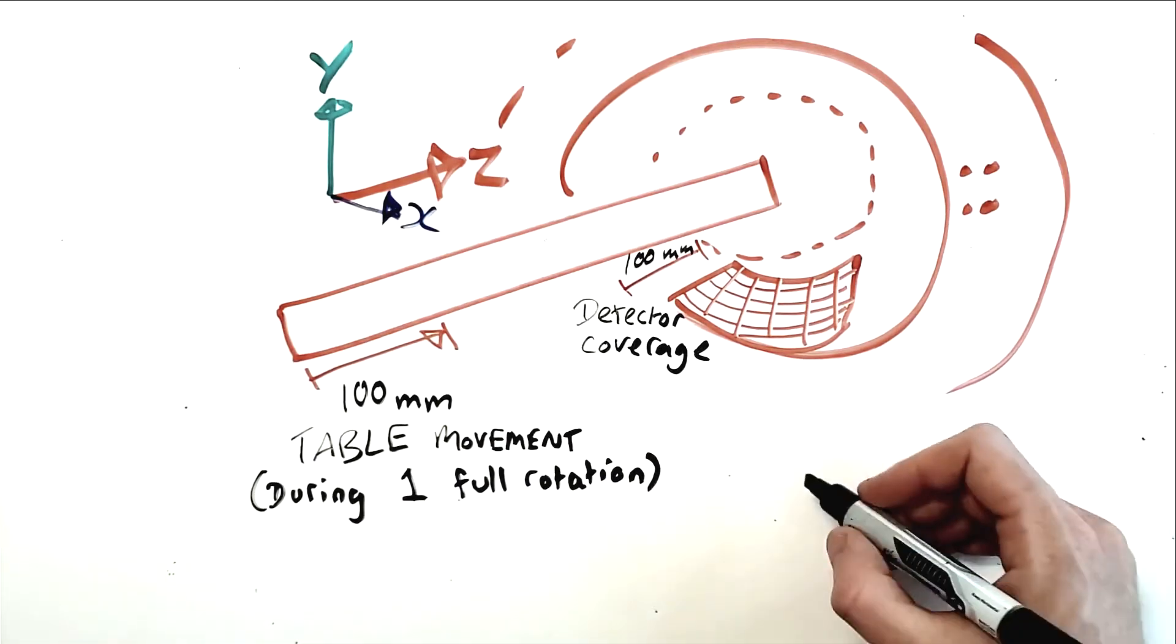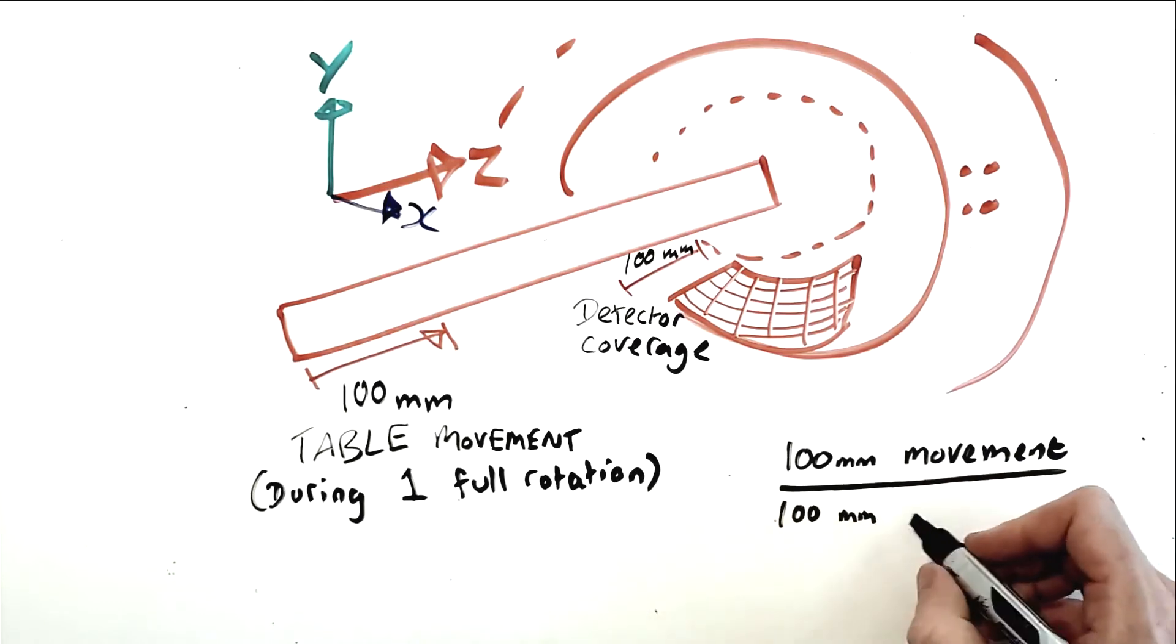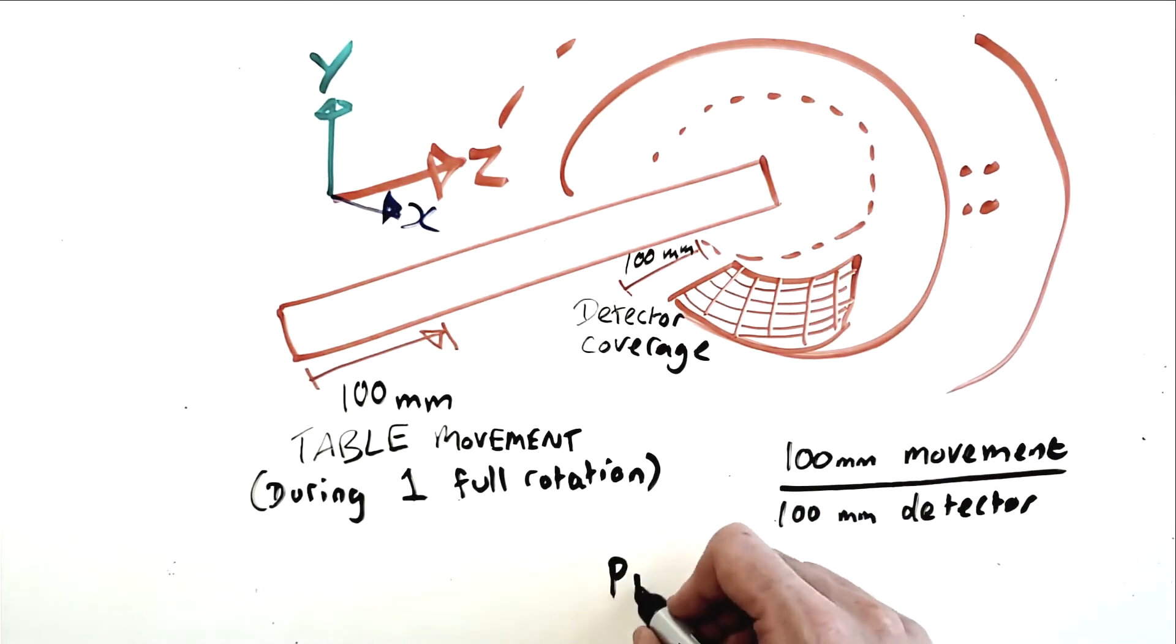A simple way to think of this is to interpret pitch as a measure of the table movement speed. And while speed is normally measured in km per hour or m per second, pitch is expressed in terms of z-axis table movement per 1 unit of detector area coverage.